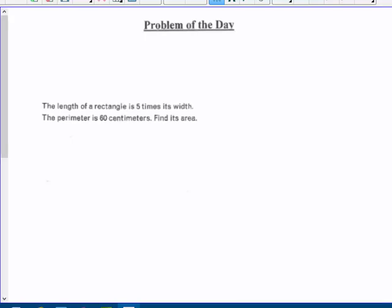Today's video starts on page 16 in your packet. So this is video 9, starting on page 16. The length of a rectangle is five times its width. The perimeter is 60 centimeters. Find its area.